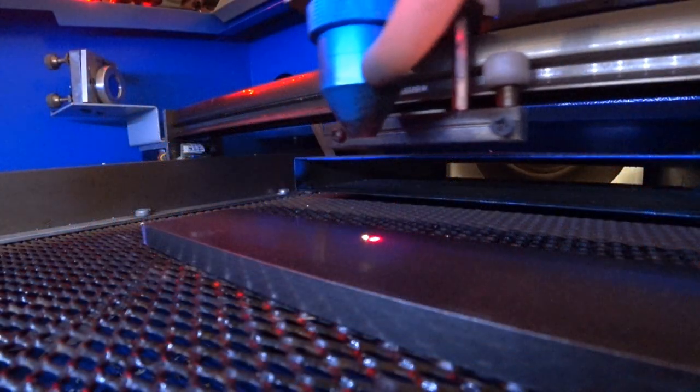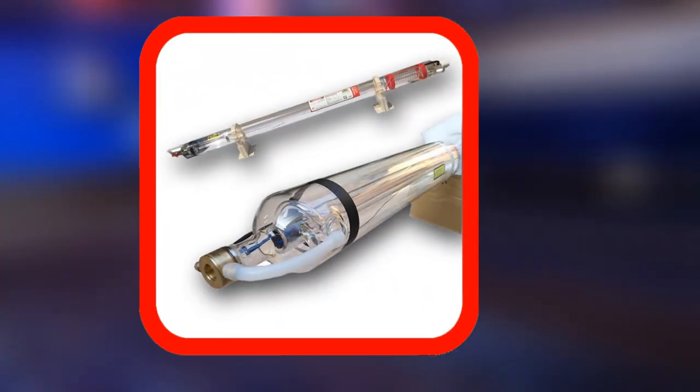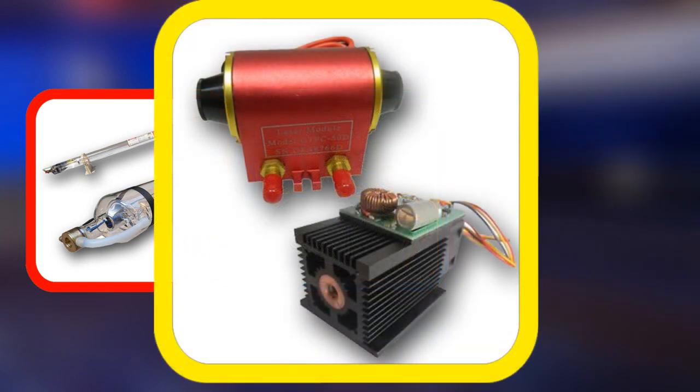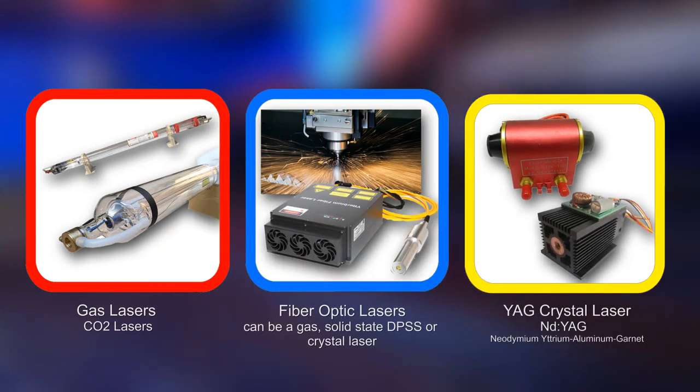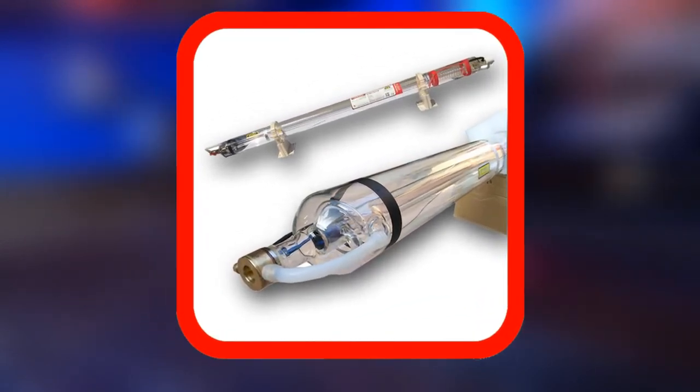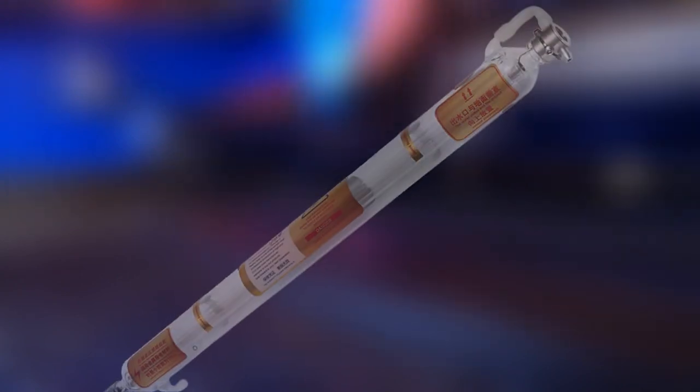There are three categories of lasers used for cutting and engraving: CO2 or gas lasers, fiber lasers, and YAG or crystal lasers. Going into them all and their principles would take too much space, so today we're only talking about gas lasers such as the K40.